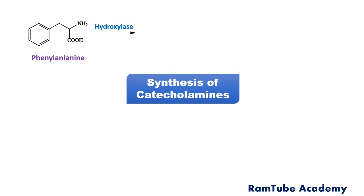The actual synthesis of catecholamines starts with the amino acid phenylalanine. In the liver, phenylalanine in the presence of the enzyme phenylalanine hydroxylase forms another amino acid, tyrosine. During this reaction, a hydroxyl group is added at the para position.